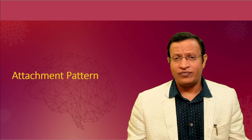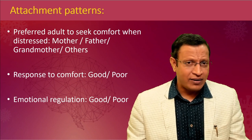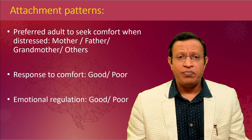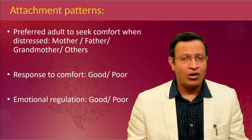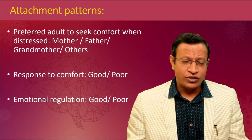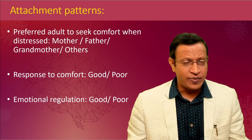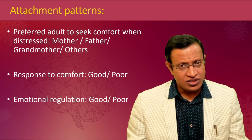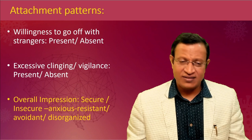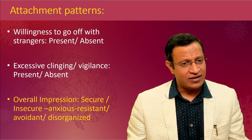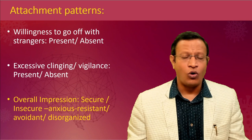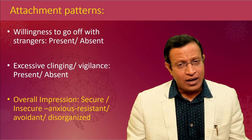After temperamental history, ask about attachment pattern. Attachment theory plays a crucial role in child development. Attachment is about the preferred adult the child seeks comfort from when in distress — whether mother, father, grandmother, or others. Note the response to comfort — whether it is good or poor (i.e., child continues to be distressed despite comfort). Check willingness to go with strangers, excessive clinging, and vigilance. Overall, comment on whether the child is secure, insecure, anxious, resistant, avoidant, or disorganized in attachment.